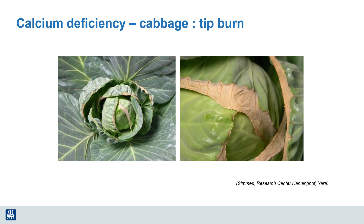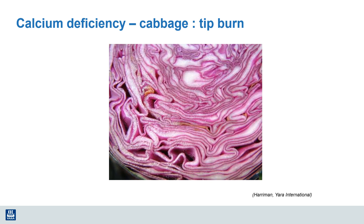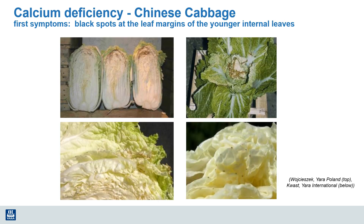Cabbage is a crop where we see evidence of calcium deficiency, where calcium does not move all the way to the edges of the leaf and deficiency symptoms start to develop — especially inside the head of the cabbage where there's not much transpiration and therefore not much calcium movement. We see brown internal tissue where, due to a lack of calcium, the tissue breaks down in storage. Chinese cabbage shows a similar lack of calcium impacting internal tissue and also leaf tips, where browning and dark spots develop.